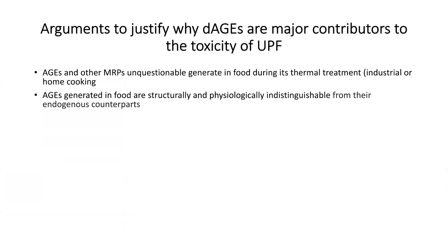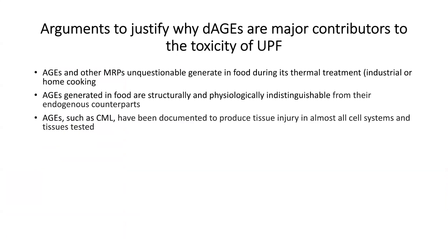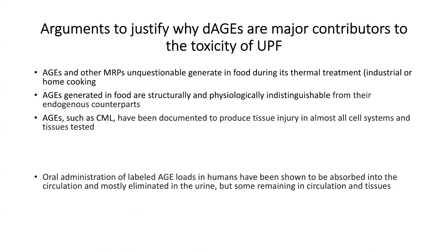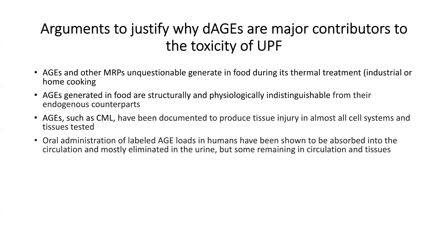AGEs generated in food are structurally and physiologically indistinguishable from their endogenous counterpart. AGEs such as CML have been documented to produce tissue injuries in almost all cell systems and tissues. And if they are not different from the endogenous, how does the body know if it came from outside or from inside? Oral administration of labeled AGE loads in humans has been shown to be absorbed into circulation and mostly eliminated in the urine, but some remaining in circulation and tissues.